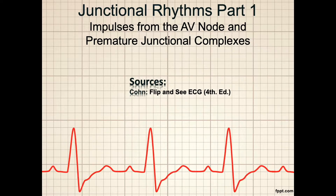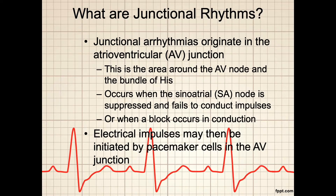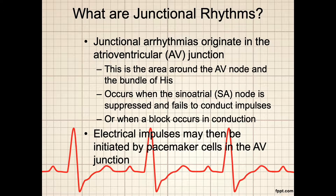What exactly are Junctional Rhythms? Junctional arrhythmias originate in the atrioventricular, or AV, junction — the area around the AV node and the bundle of His. This occurs when the sinoatrial SA node is suppressed and fails to conduct impulses, or when there is a block in conduction. In that case, electrical impulses may be initiated by pacemaker cells in the AV junction, secondary to the property of automaticity.